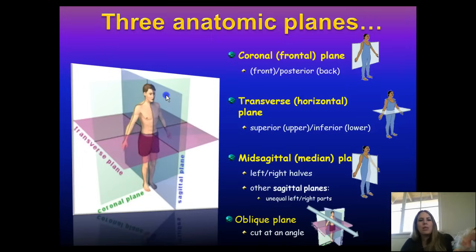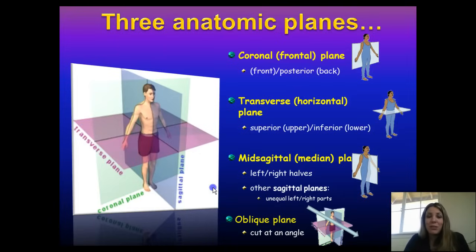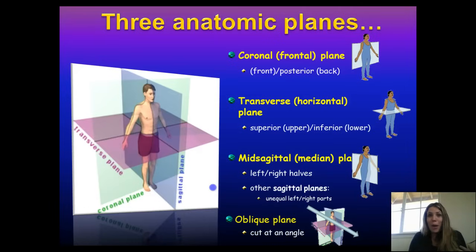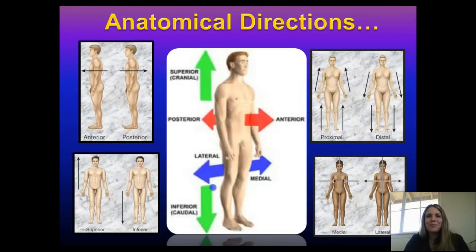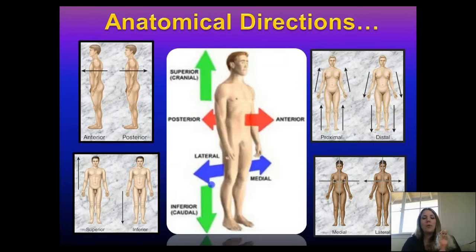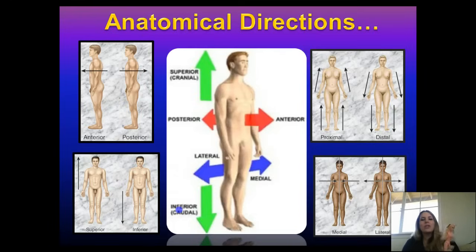Anatomy and physiology tends to use the same terms over and over. Oblique means at an angle or diagonal — for example, the oblique abdominal muscles have fibers going in a diagonal direction. Now let's go over anatomical directions. Superior means towards the top or above. Inferior means lower or towards the bottom.